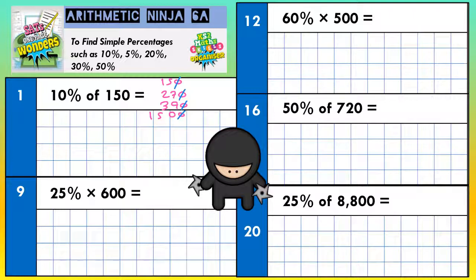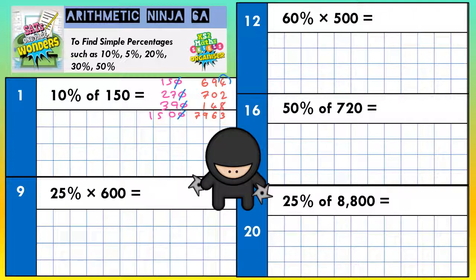For example, you could have 10% of 694, 10% of 702, 10% of 148, and 10% of 7,963. Now, if there is no zero to knock off, you've got to have a slightly different approach — you just move your decimal point one place in from the end, and that will give you 10%. So 10% of 694 is 69.4, 10% of 702 is 70.2, 10% of 148 is 14.8, and 10% of 7,963 is 796.3.